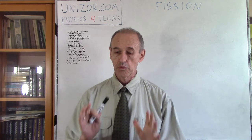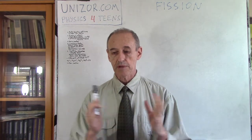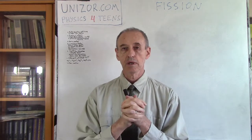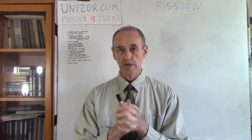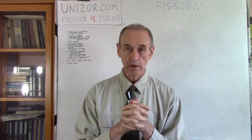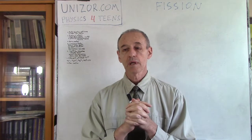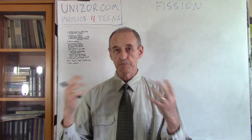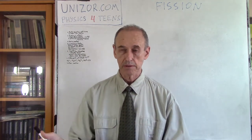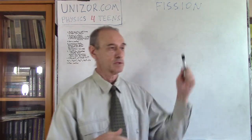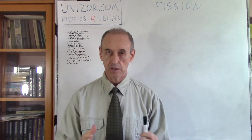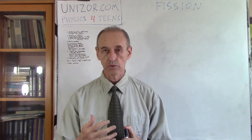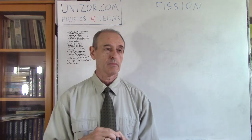We did talk about what happens if we combine certain protons and neutrons together to form a bigger nucleus. And we also talked about something opposite — we can have a bigger nucleus and split it. So today we will talk about fission, which is a reaction of splitting a larger, heavier nucleus into smaller parts.